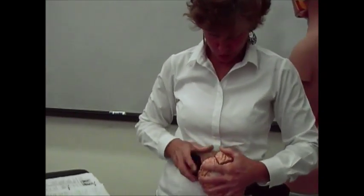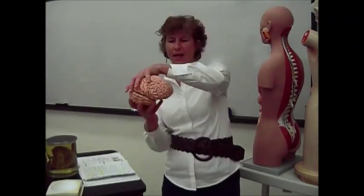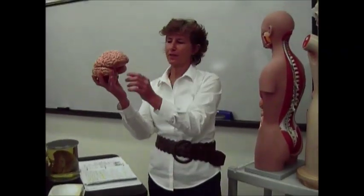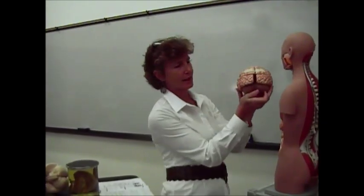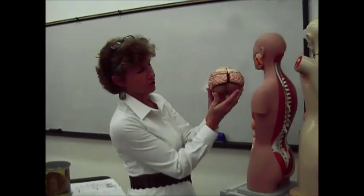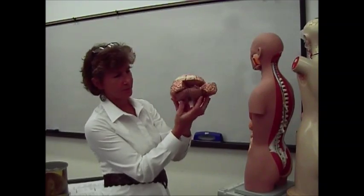You have the cerebrum, which is this curly part. And then you have this kind of brown layered section in the back, which is known as the cerebellum.